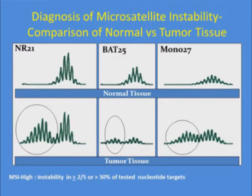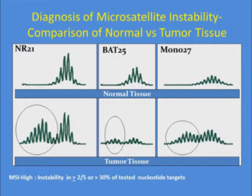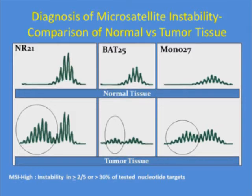This is a typical electropherogram that a pathologist would see when doing microsatellite instability testing on a patient's tumor. There is a certain pattern that characterizes normal tissue, and when a tumor has developed through microsatellite instability, there will be abnormality in these nucleotide peaks. That comparison between normal and tumor is microsatellite instability.